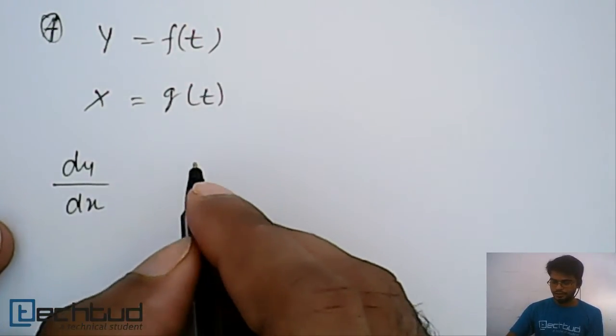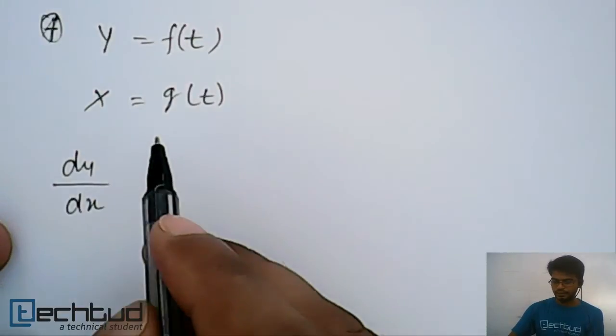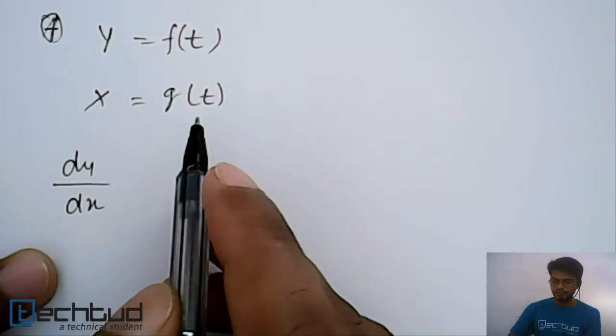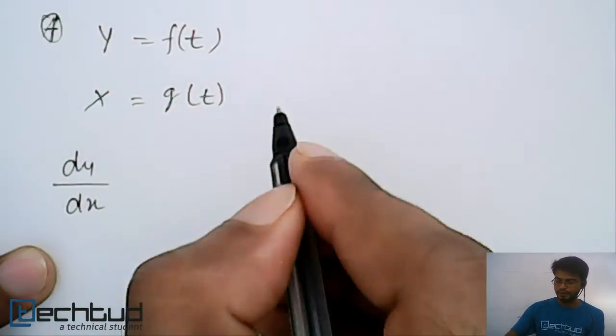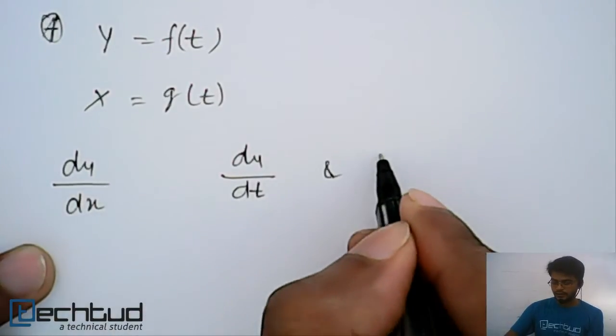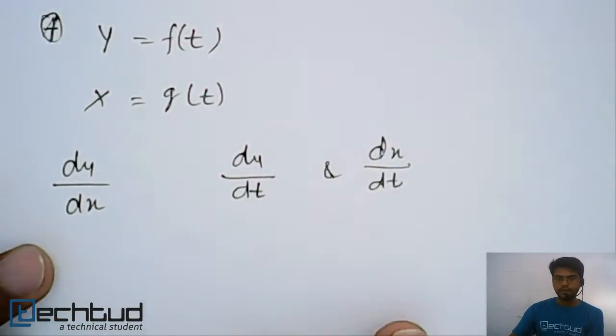We first differentiate y as a function of t with respect to t, and x with respect to t. So what do we find? We find first of all dy/dt and dx/dt.